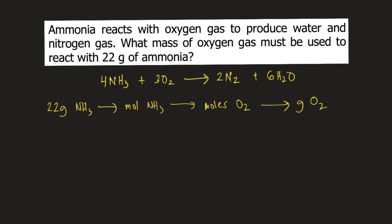We start with 22 grams of ammonia. To convert this to moles, we need the molar mass of ammonia. 1 mole of ammonia weighs 17.034 grams. The grams of ammonia will cancel and we have moles of ammonia.